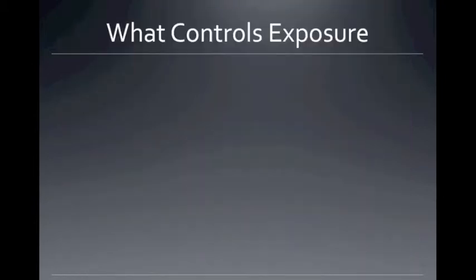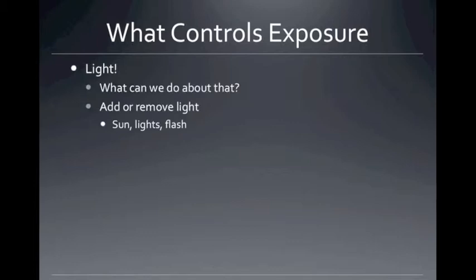So what controls exposure? Light — the amount of light that's in the scene. And what can we do about that? We can add or remove light, move the subject into the sun, add lights, use a flash, take away lights, turn off the flash. We can control how much light is hitting the scene, hitting the subject.